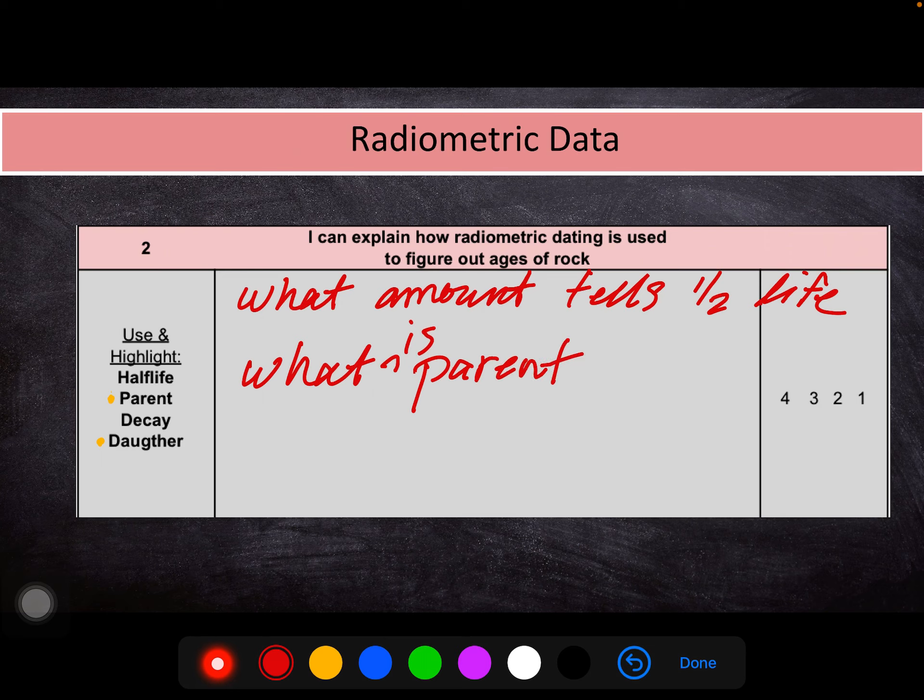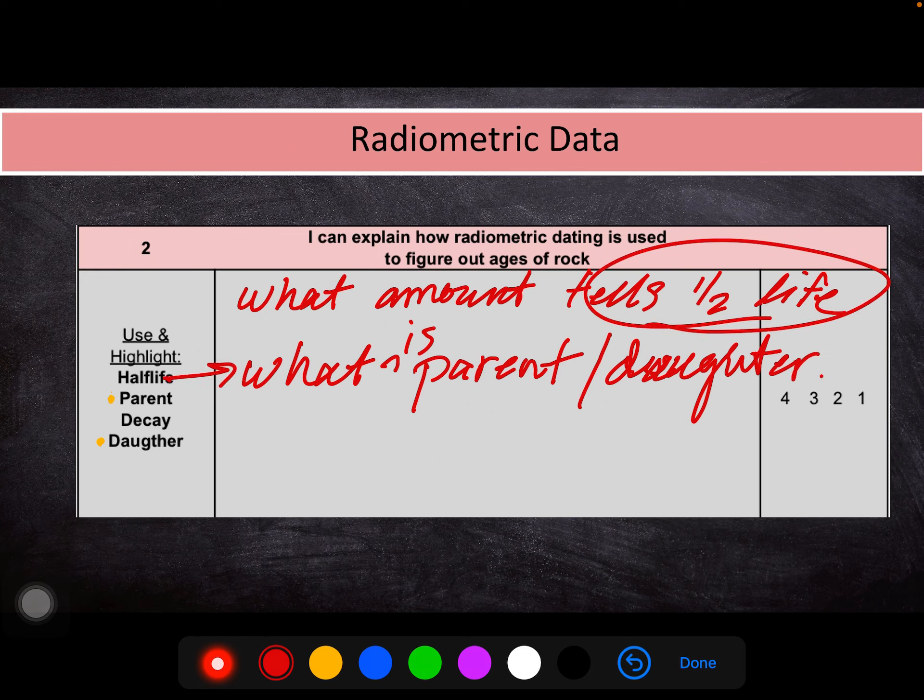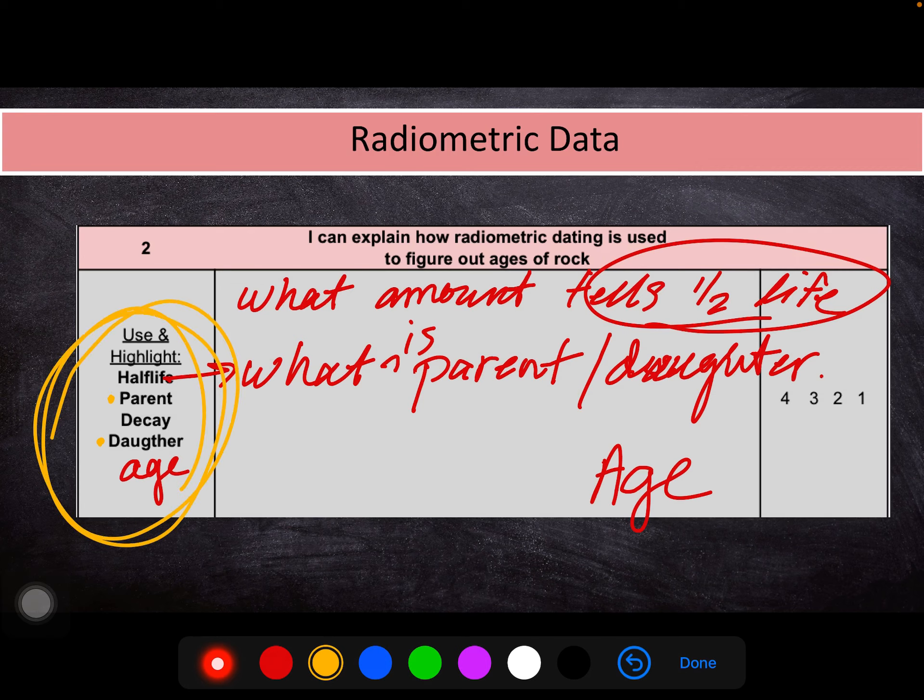What is parent and daughter? So we want to kind of define each of those and explain how those get us to that half-life and tell us age. Really, age should be a key word here too. So remember, we're using all of these in our summary. Use and highlight.